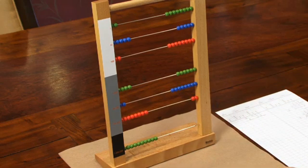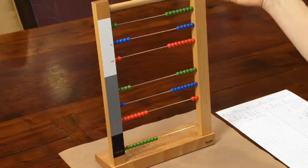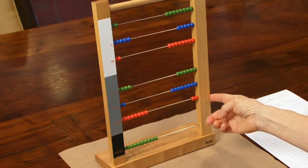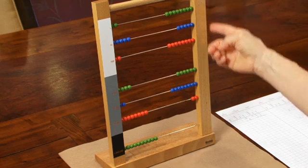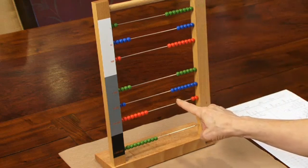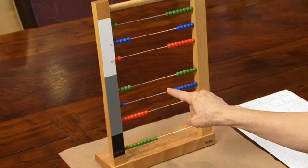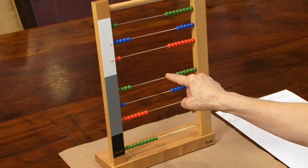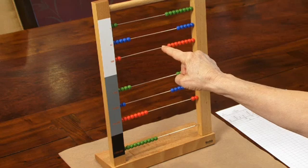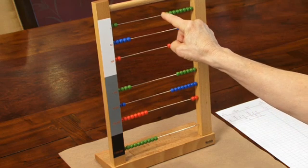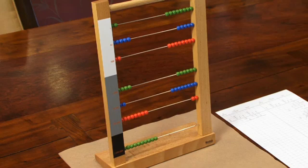So I've completed the multiplication, and now I can read my answer. And I always read from the lowest bead bars up. 286,858. That's my final product.